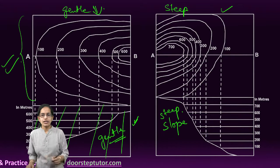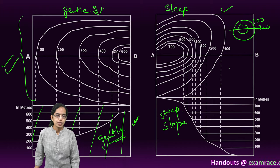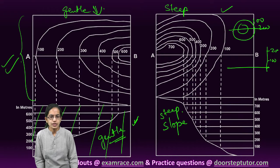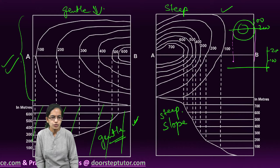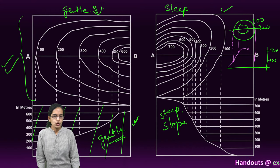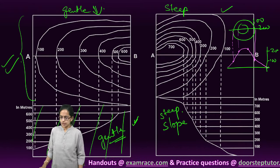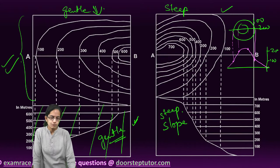To repeat: whatever contour lines are given, for example contours at 100 and 200, you cut that point, draw a line, mark 100 and 200 on the vertical axis, plot the points, join them, and get the shape — for instance, a simple small hill. That is how we draw a cross section for contours.